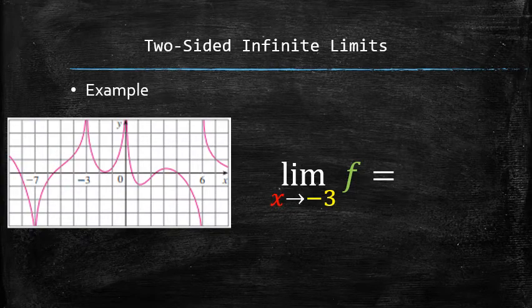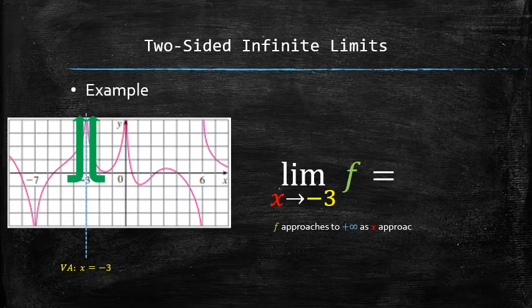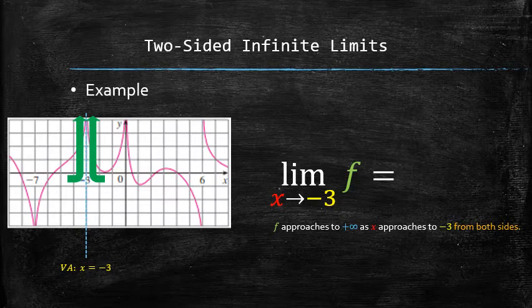To find the next limit, we need to determine whether the function goes up or down on both sides of the asymptote at x equals negative 3. It is easy to see that the function approaches positive infinity on both sides. In other words, f approaches to positive infinity as x approaches to negative 3 from both sides. Therefore, the answer is positive infinity.